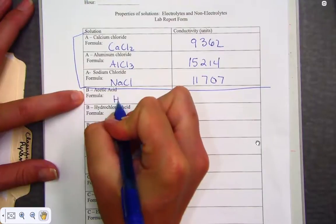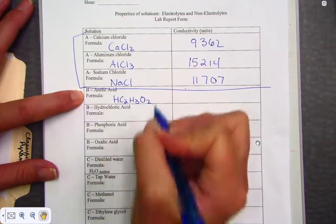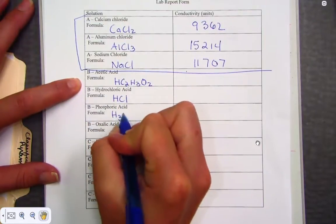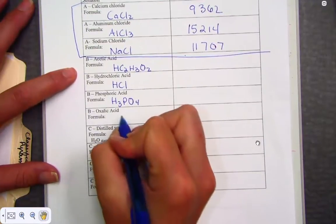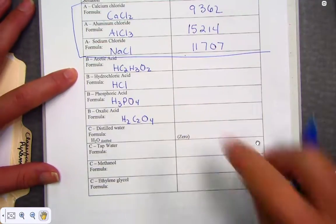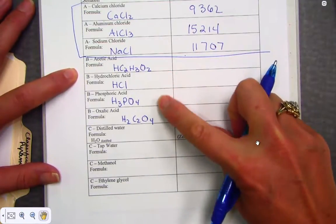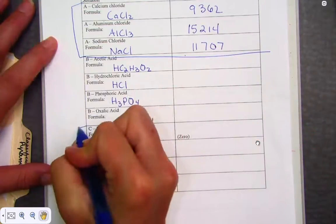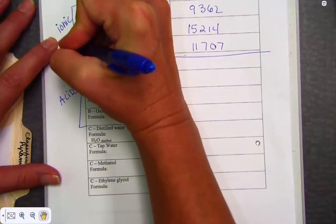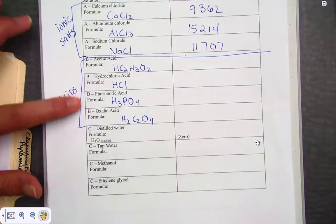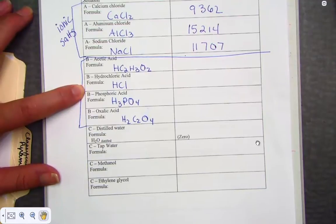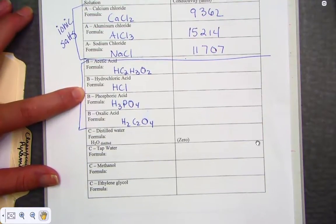Part B, we place the conductivity meter into acetic acid, hydrochloric acid, phosphoric acid, and oxalic acid. Acetic, hydrochloric, phosphoric, and oxalic acid made up the compounds for Part B. Notice these were all acids. These guys were ionic compounds. Now, out of this list, I suspect hydrochloric to be quite significantly high, because it indeed is one of the seven strong acids that we're working towards memorizing.